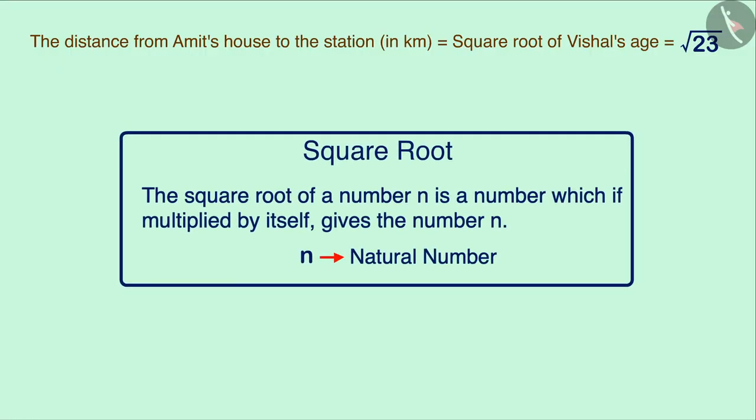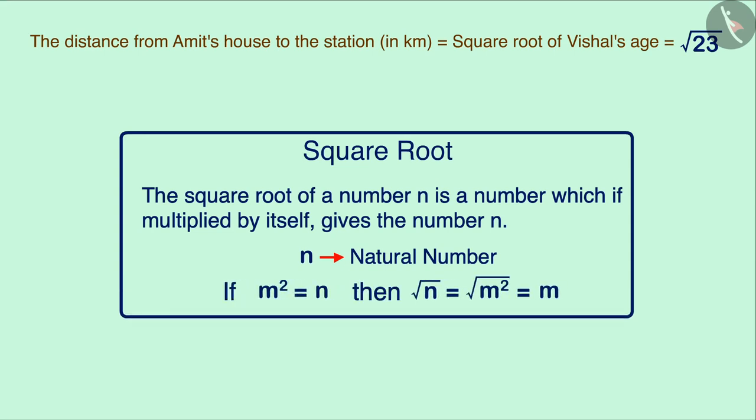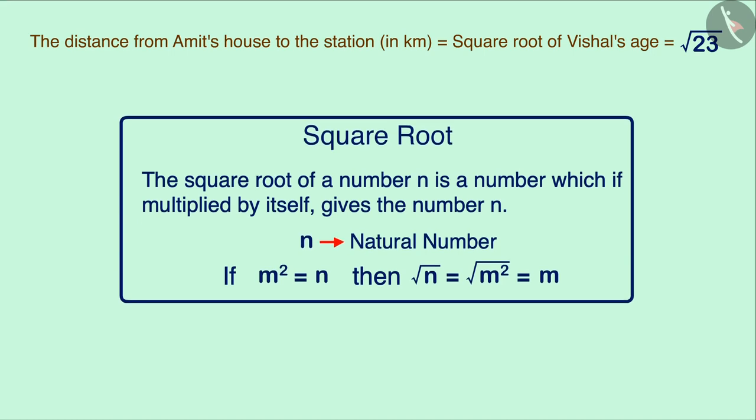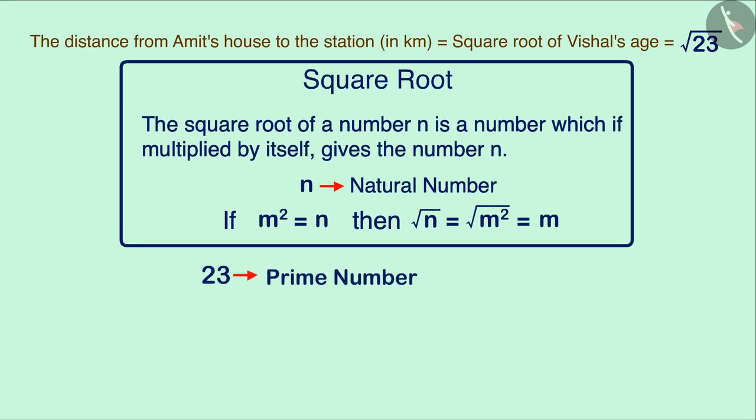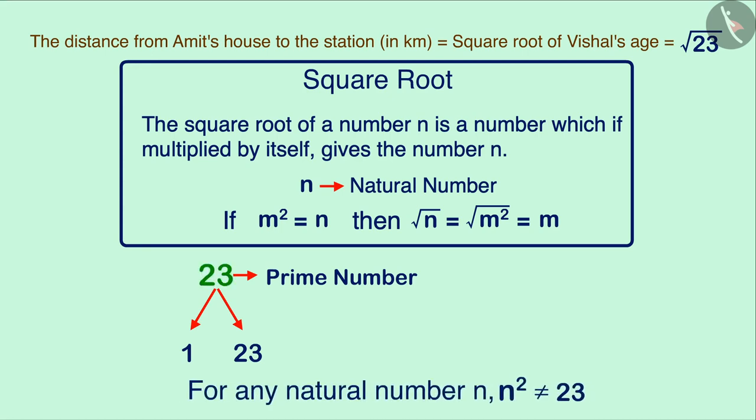The square root of a natural number n is a number whose square is equal to n. We know that 23 is a prime number with only two factors, 1 and 23 itself.